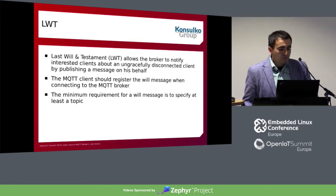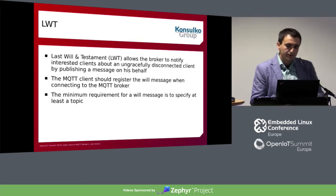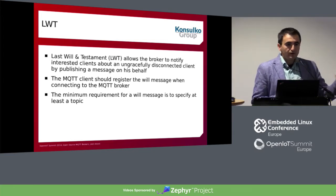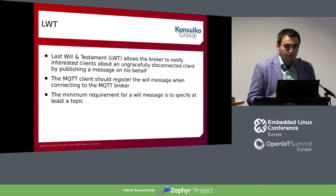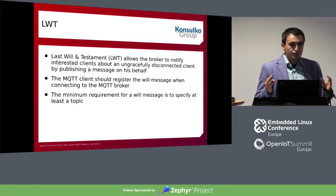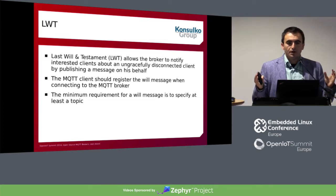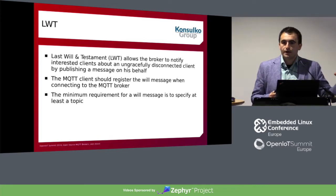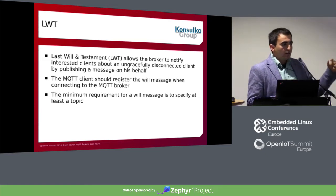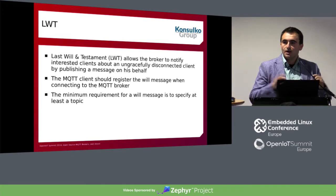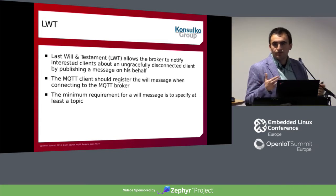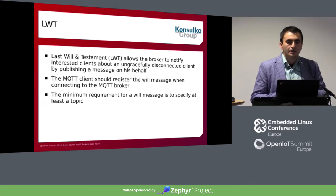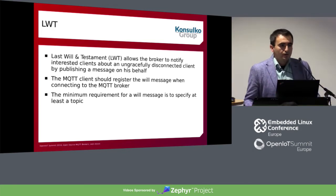Another feature is last will and testament. It's a really cool feature that allows the broker to notify interested clients about an ungracefully disconnected client by publishing a message on its behalf. When the client connects to the broker, it specifies its last will — the message that is going to be sent. The only minimal requirement is that this message has a topic. You can optionally include a quality of service, retain flag, and payload, depending on your application logic.